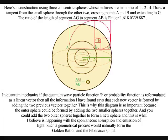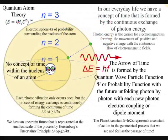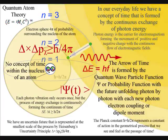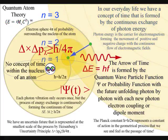In quantum mechanics, if the quantum wave particle function or probability function is reformulated as a linear vector, then all the information I have found says that each new vector is formed by adding the two previous vectors together.